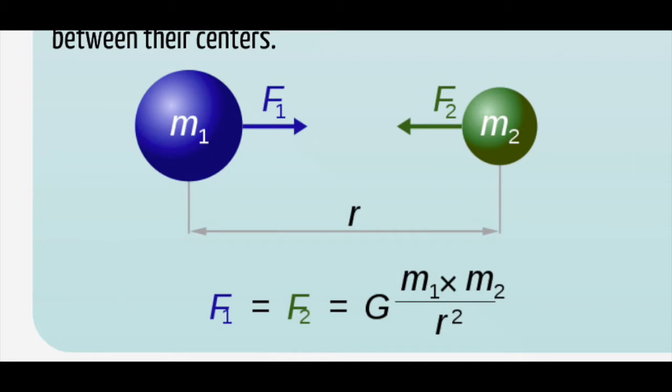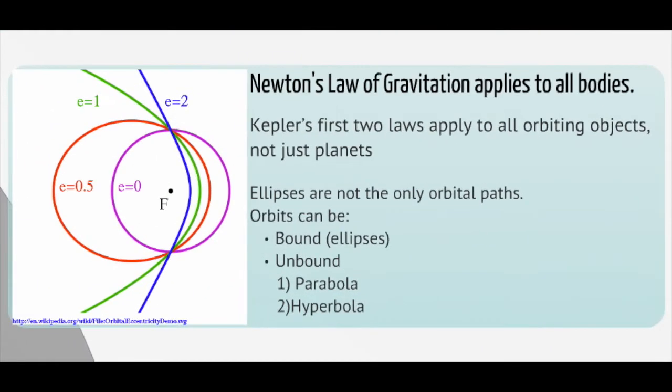And I can make it an equality by using a constant of equality, G, which is called the gravitational constant, or the universal gravitational constant.